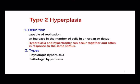Now let's talk about the second form of adaptation: hyperplasia. It is an increase in the number of cells in an organ or tissue, which may cause an increase in volume. It is noted that hyperplasia and hypertrophy can occur together and often in response to the same stimuli. Hyperplasia can also be divided into two types: the physiologic and pathologic types.